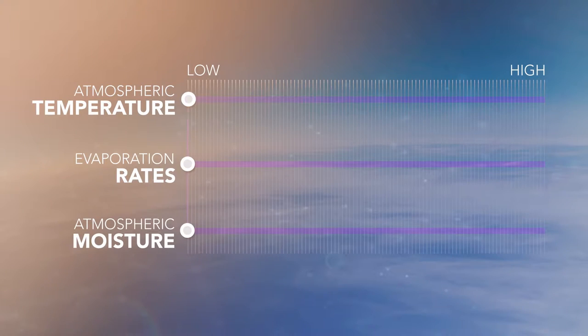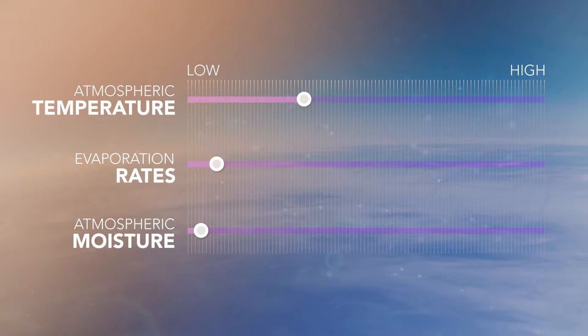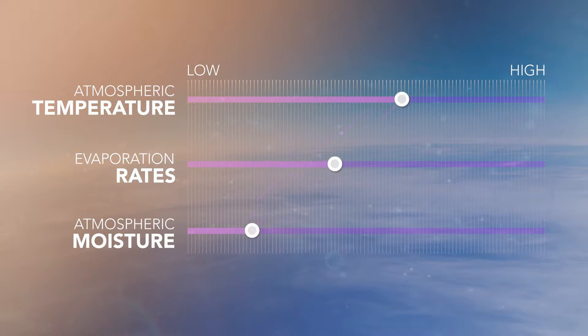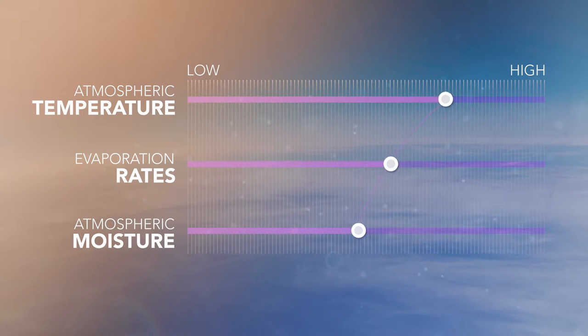The cycling of water in and out of the atmosphere has a significant impact on the weather patterns across the Earth. Climate change is altering the water cycle by affecting where, when, and how much water is available. As the atmosphere warms, evaporation rates will increase, resulting in increased amounts of moisture circulating throughout the lower atmosphere.